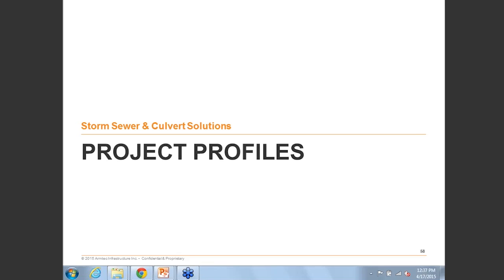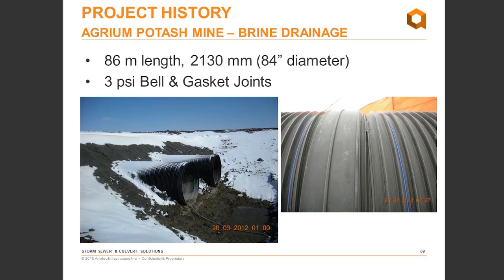The first project is the Agrian Potash Mine in Saskatchewan — a twin run of 43 meters, totaling 86 meters, with a diameter of just over 2,100 mm (about 84 inches). The purpose of these lines was drainage of a brine pool, requiring only a low-pressure 3 psi bell and gasket joint. As it was brine water being conveyed with an extremely high salt content, Duramax was the optimal choice due to its ability to handle high salinity. Other large diameter options such as CSP or reinforced concrete pipe would have been much less likely to provide a long lifetime in these conditions.